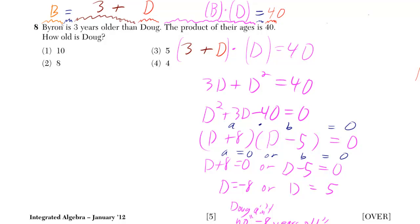Let's call Byron's age B, and that is, in other words, it's equal to three years more than Doug's age, which we'll call D. So we're going to have three plus Doug's age.